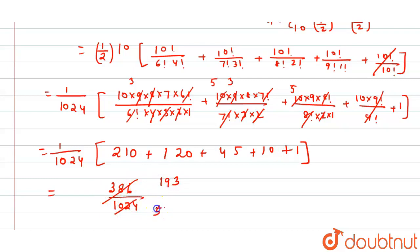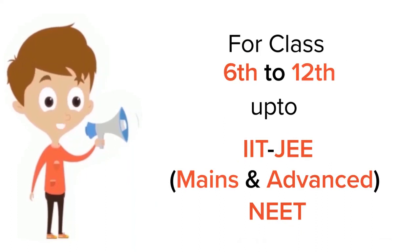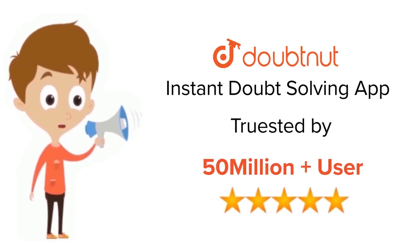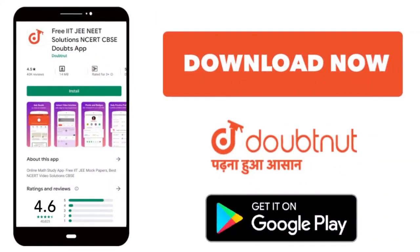So the required probability is 193 by 512. That is the correct answer. For class 6 to 12, IIT JEE and NEET level, trusted by more than 5 crore students, download the DoubtNet app today.